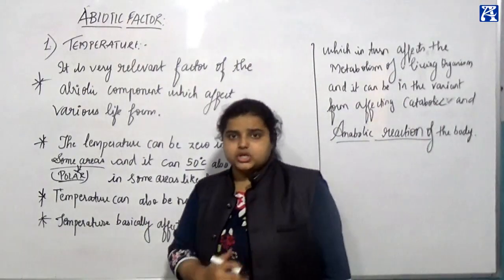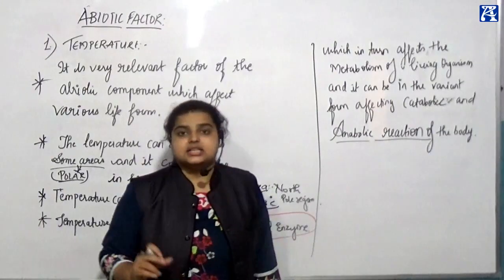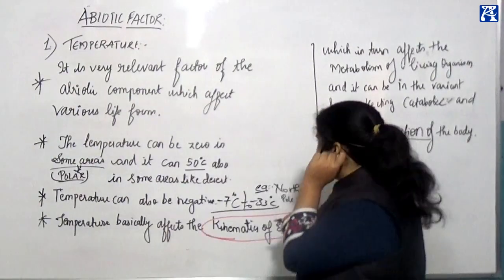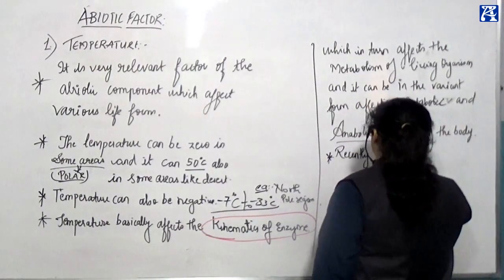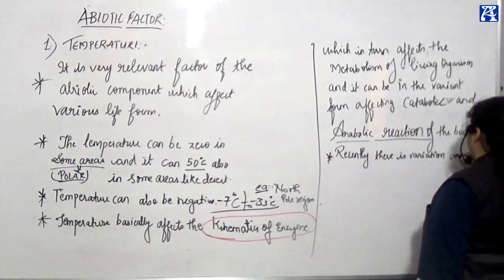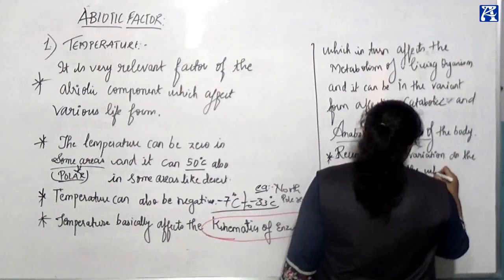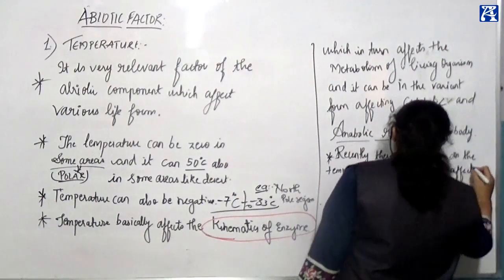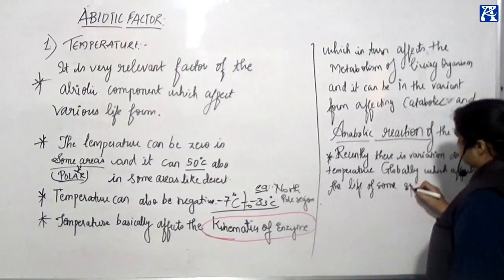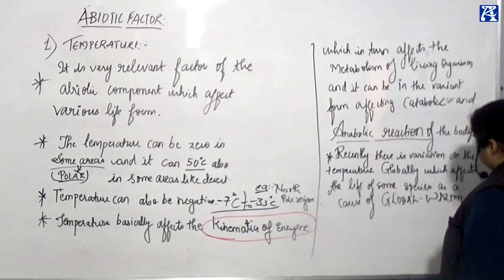In recent years, temperature variation has been seen in a vast range globally. This may affect the life of some species as a cause of global warming. Make a note of this.